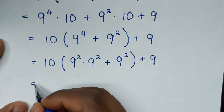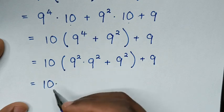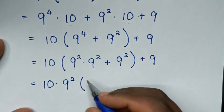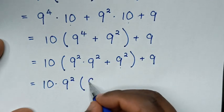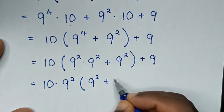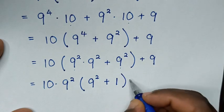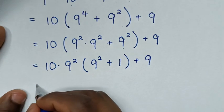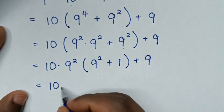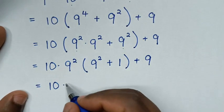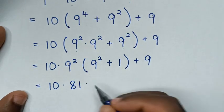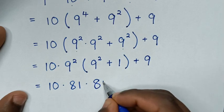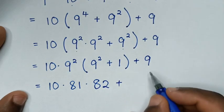Then in the next step it will be equal to: 9 power 2 is common — so 9 power 2 times (9 power 2 plus 1), bracket. Then plus this 9. Then in the next step it will be equal to: 9 power 2, which is 81, times (81 plus 1), which is 82. Then plus this 9.